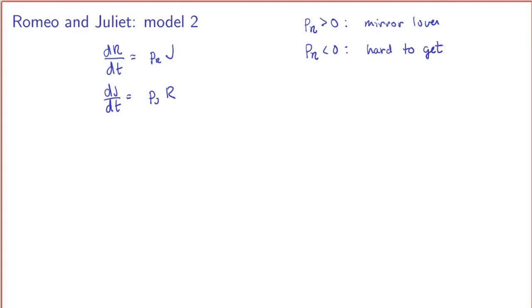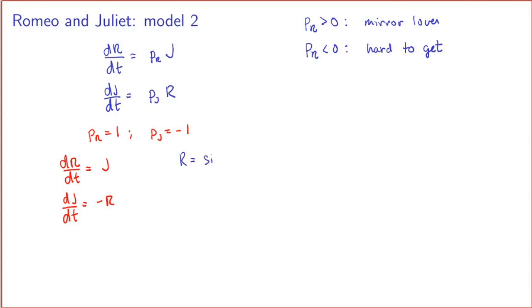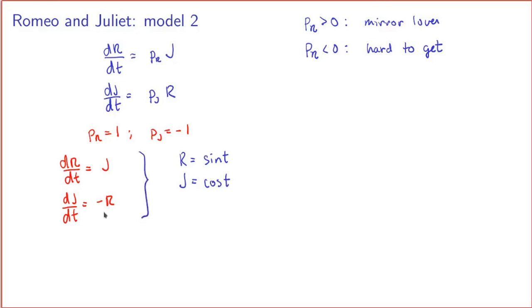The same applies for the second equation. To see what the solutions look like, let's take a special case: the first coefficient equal to 1 and the second equal to -1, so the equations become dR/dt = J and dJ/dt = -R. We haven't formally learned to solve such systems, but it's easy to guess: if R is a sine function, then its derivative is cosine, so J should be cosine. Indeed, this also satisfies the second equation. We can sketch the graph — Romeo's love is a sine function and Juliet's love is a cosine function.